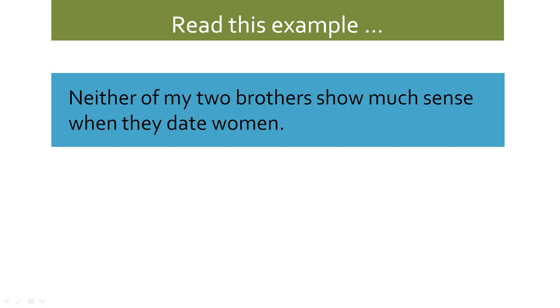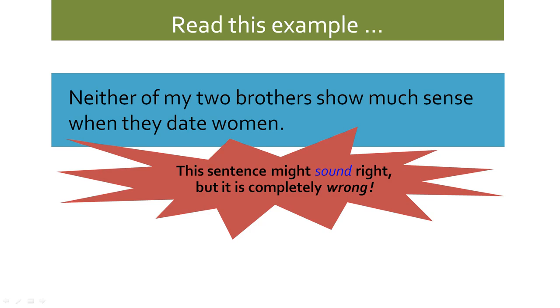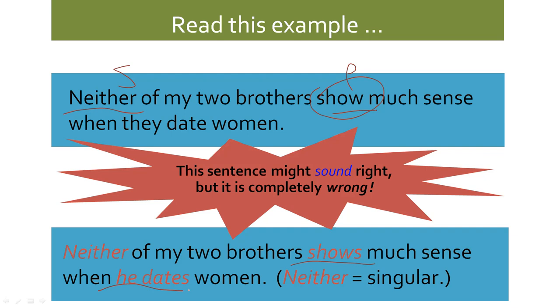For example: 'Neither of my two brothers show much sense when they date women.' This might sound right, but it's wrong. 'Neither' is one of our singular indefinite pronouns, and 'show' without an S is a plural verb — so we have a problem. To fix it: 'Neither of my two brothers shows much sense when he dates women.' We're fixing the additional verb as well.